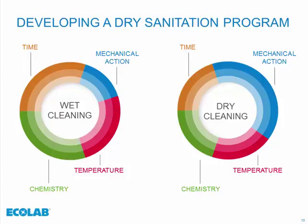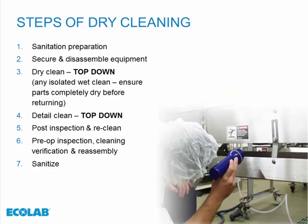In dry cleaning, temperature and chemistry are reduced greatly because employees are coming into contact with solutions more — we can't use 140-degree water and have to use a room temperature solution. Chemistry usually has to be more neutral, safer to use, with fewer PPE requirements. Mechanical action is adversely increased — we have to put more elbow grease into these solutions when getting up close with equipment. And time, if done correctly, we've seen that dry cleaning can actually save you time compared to wet cleaning, which translates into improved productivity.